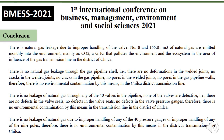There is no improper handling of 40% of the gas pipeline; no bulbs are defective; there are no defects in the bulb seals, no defects in the bulb seeds, and no defects in the bulb pressure gauges. Therefore, there is no environmental contamination by this means in the transmission line in the district of Chilca.